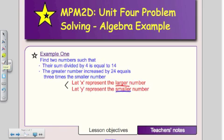And we're going to translate each statement into algebra. So whenever we see the word sum, sum refers to addition. So for my equation number 1, their sum, that would be X plus Y, divided by 4, is going to be equal to 14. That's my equation number 1.